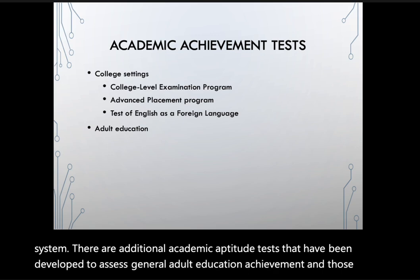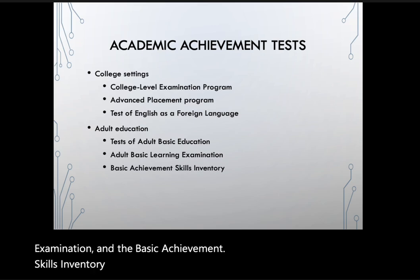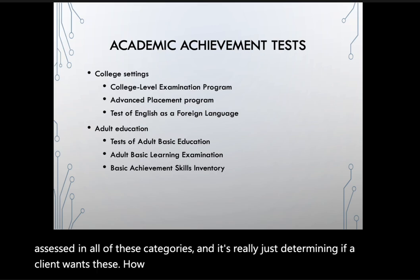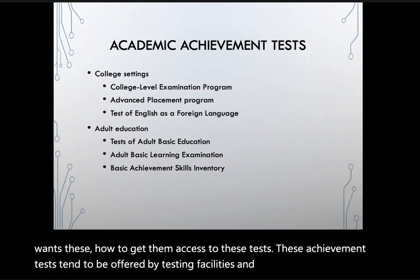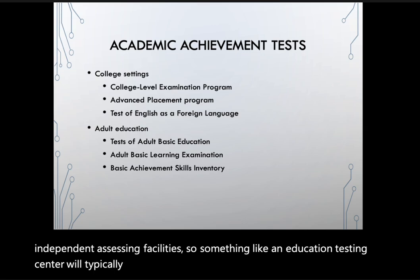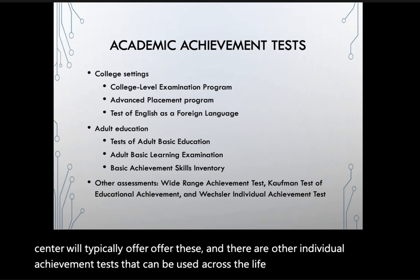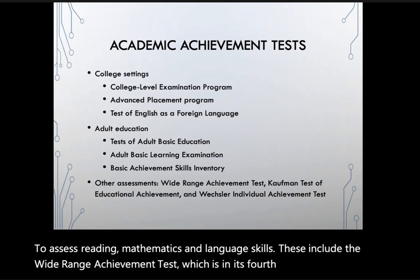Additional academic achievement tests have been developed to assess general adult education achievement. These include the Tests of Adult Basic Education (TABE), the Adult Basic Learning Examination, and the Basic Achievement Skills Inventory. Reading, mathematics, and language ability are assessed across all of these. These tests are typically offered through education testing centers rather than independent assessment facilities.